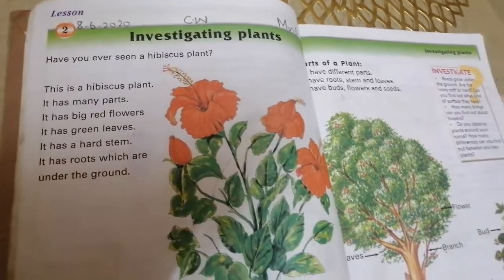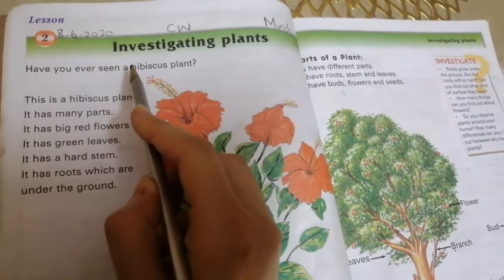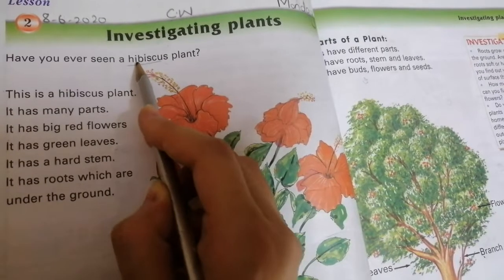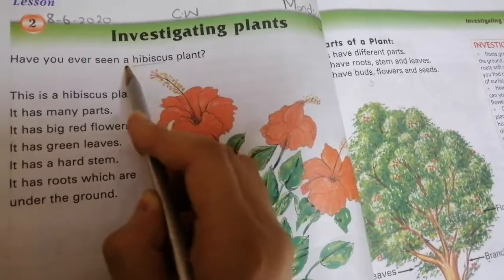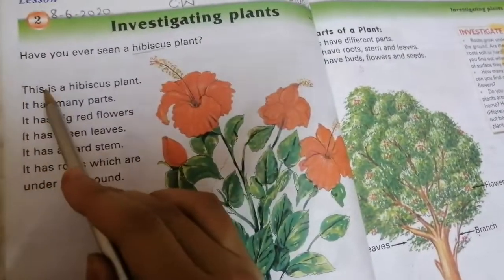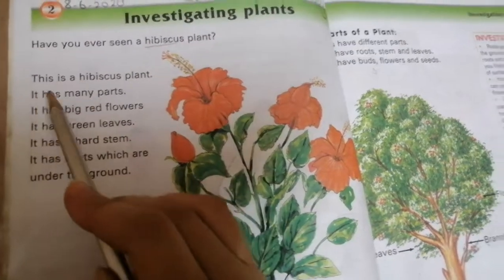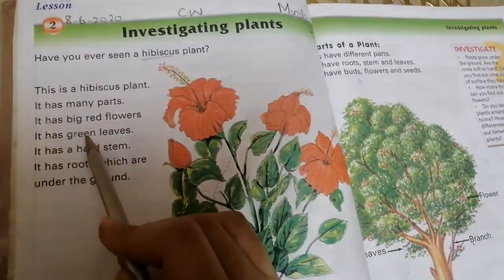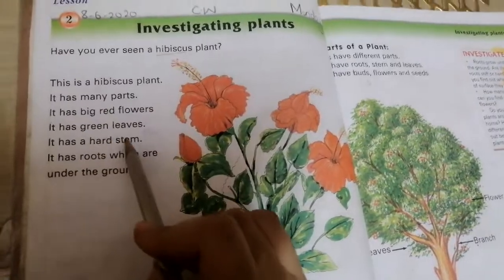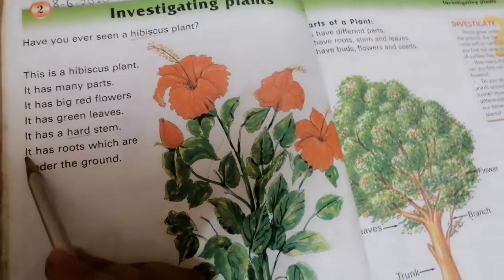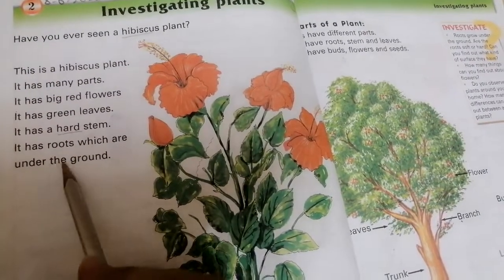We are going to know what are the special things about plants. Have you ever seen a hibiscus plant? Underline hibiscus. H-I-B-I-S-C-U-S. It has big red flowers. It has green leaves. It has a hard stem. Hard means sakt. It has roots which are under the ground.